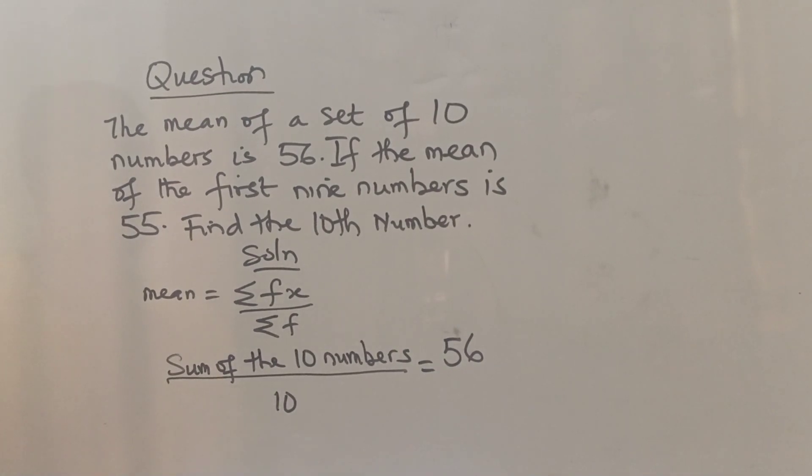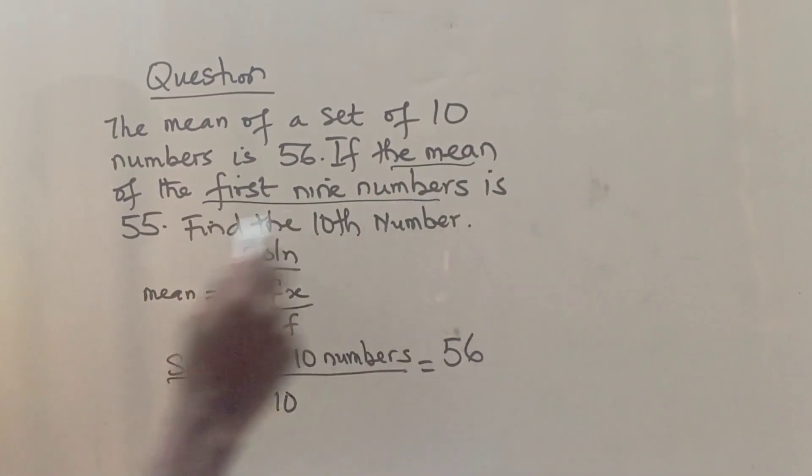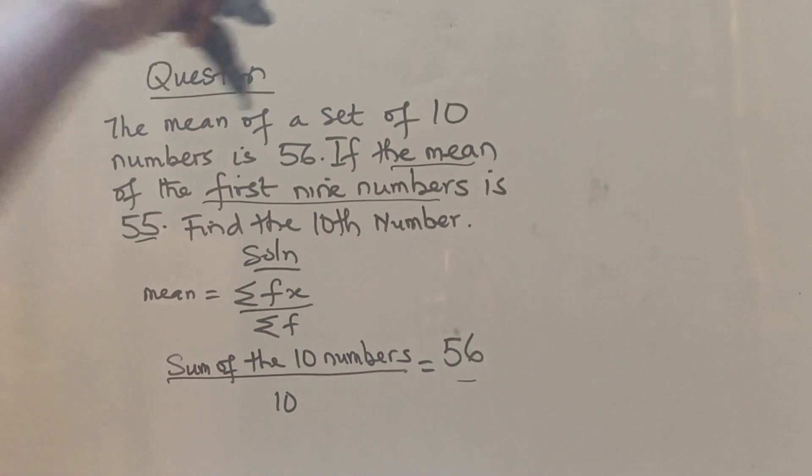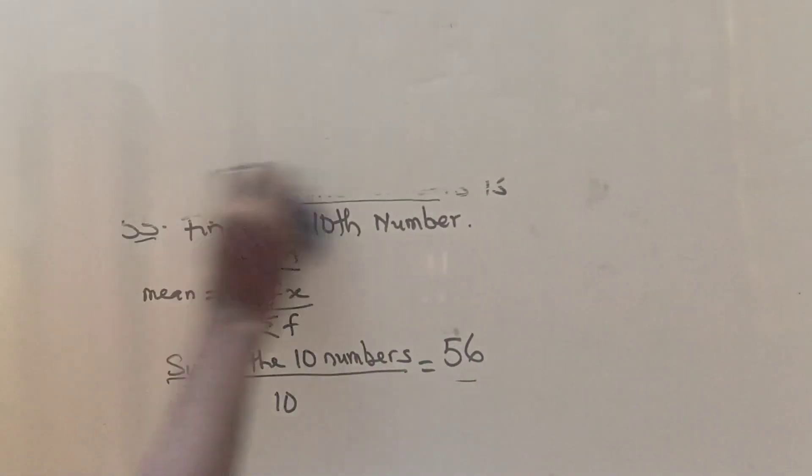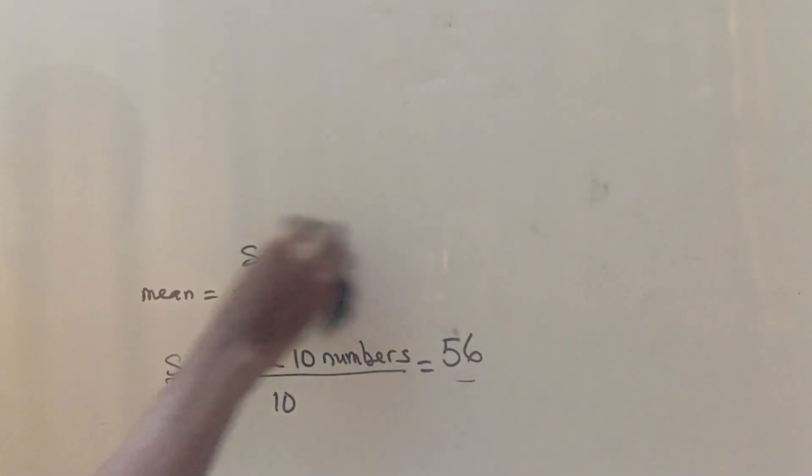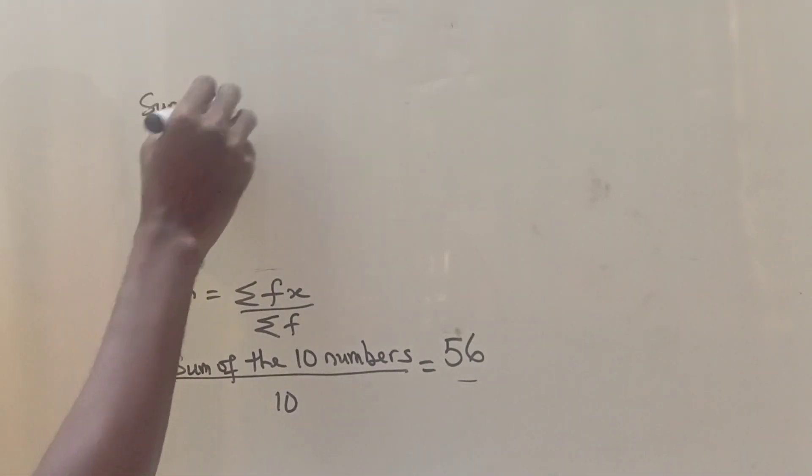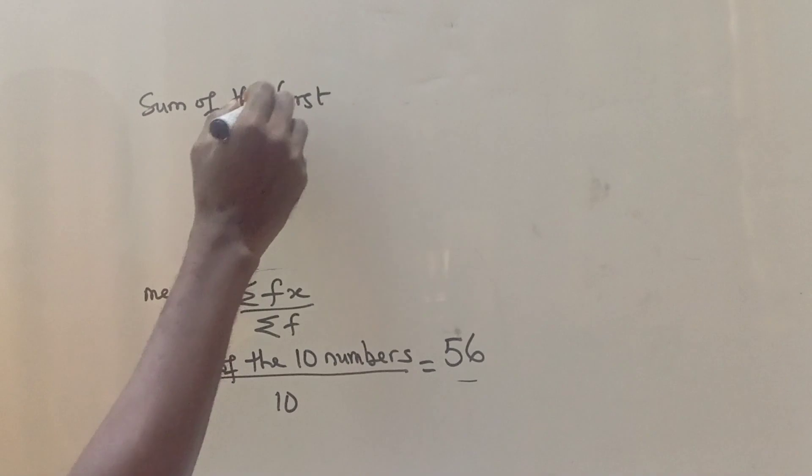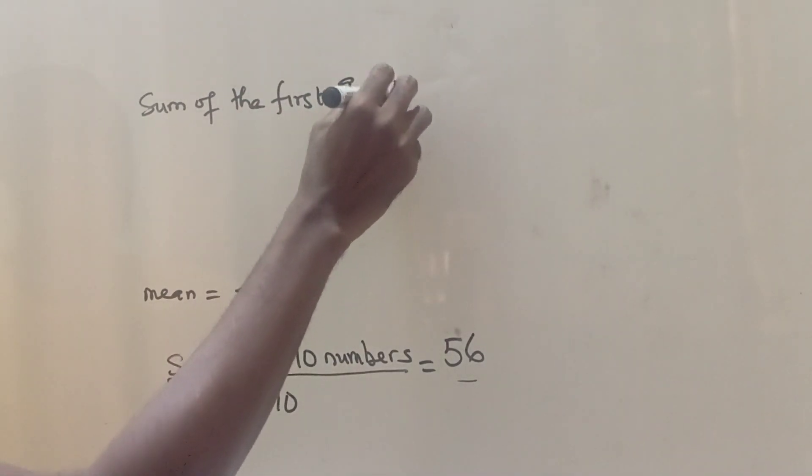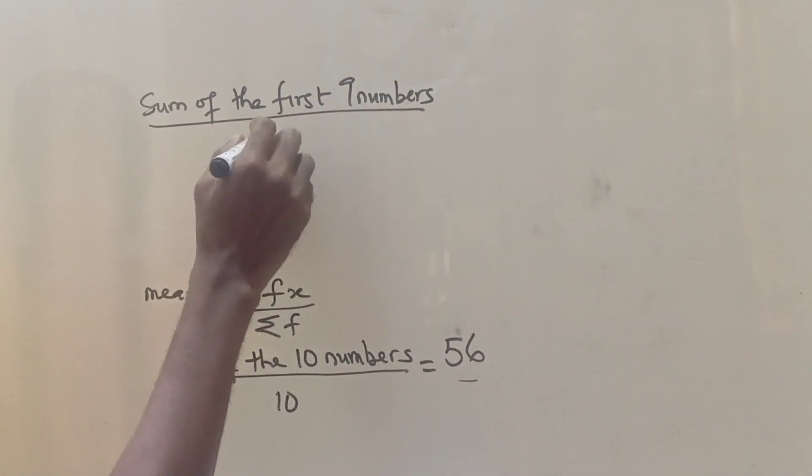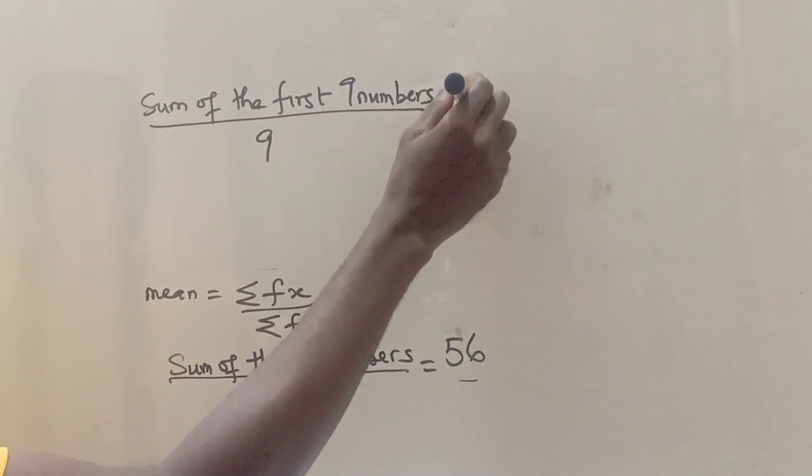The mean of the 10 numbers is 56. Now for the first nine numbers, it's 55. Find the 10th number. So let's get it. Now for the first nine numbers, we have 55, so it means the sum of the first nine numbers divided by the total number 9 is 55.